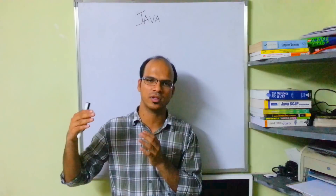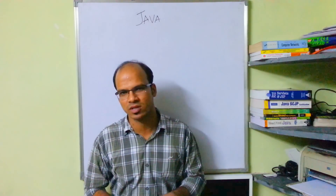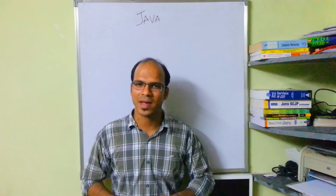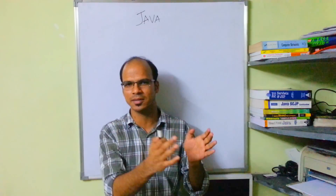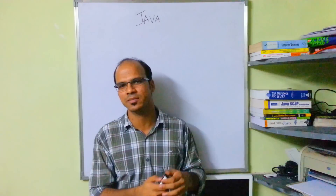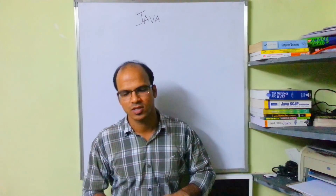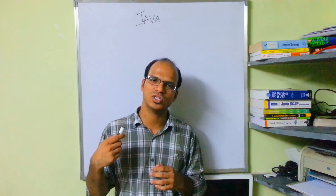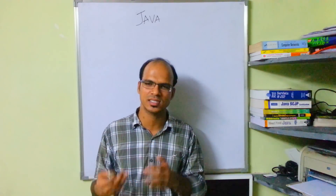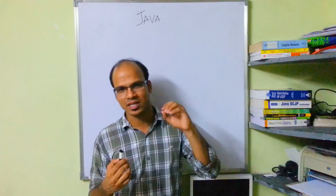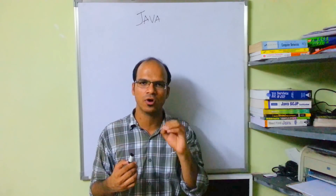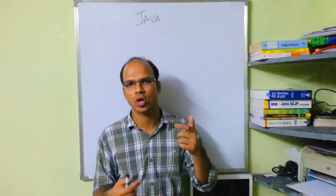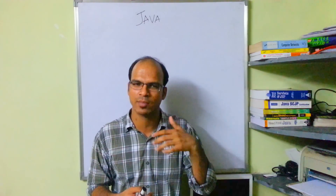Java was created by Sun Microsystems. Sun had a team in which the lead was taken by James Gosling, who created a language that is platform independent. The reason for creating Java is that at that time they needed a language which would be platform independent. So they came up with a language called Oak — in 1991 they came up with Oak.